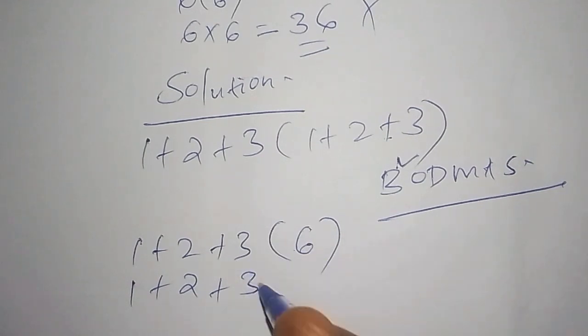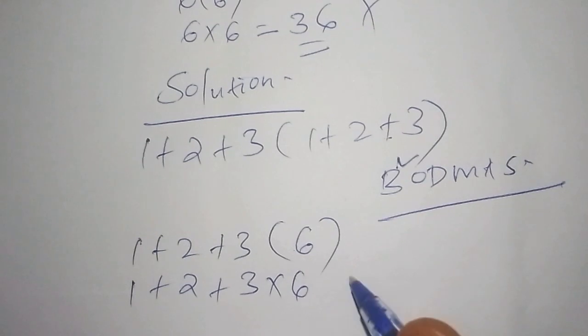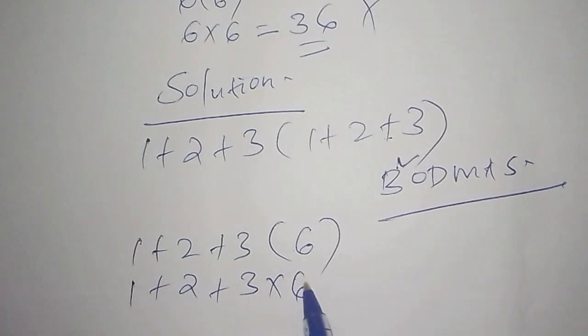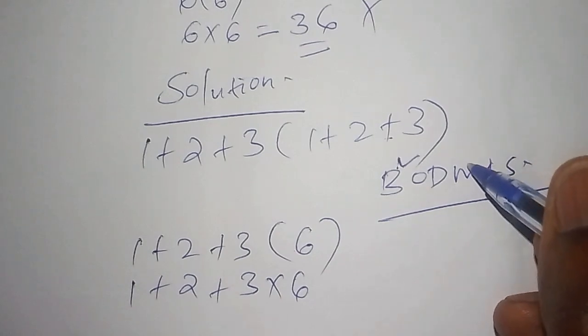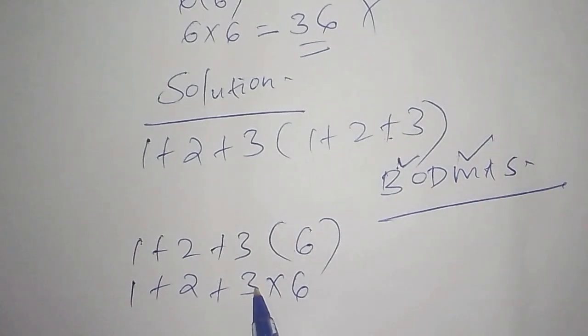That means that we are going to pick 1 + 2 + 3, then when we open the bracket we shall do away with 6, so we multiply by 6.